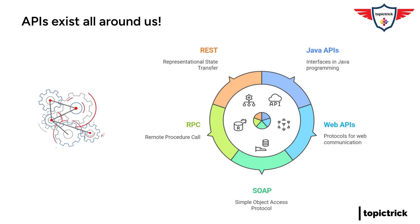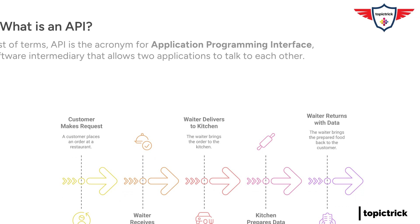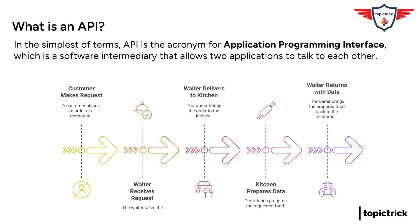So maybe we can start with the basics — what exactly is an API? Well, an API, or Application Programming Interface, is essentially a set of rules and specifications that allow different software systems to communicate with each other. Think of it like a waiter in a restaurant. You, the diner, are the client. The kitchen is the server, and the API is the waiter.